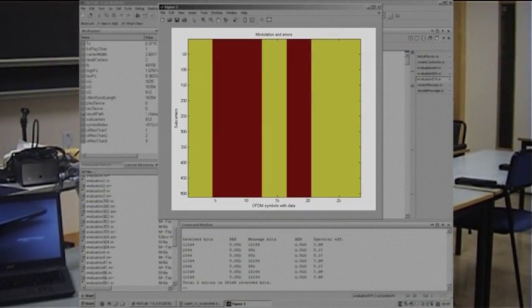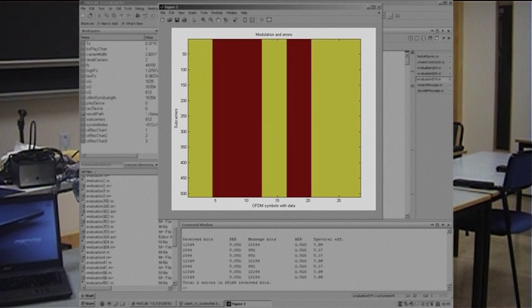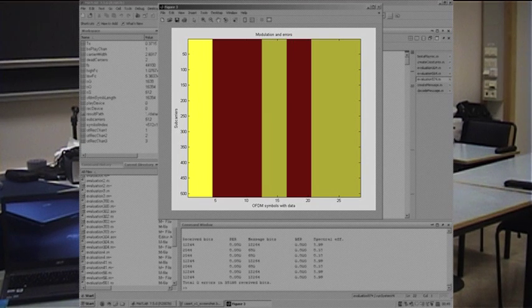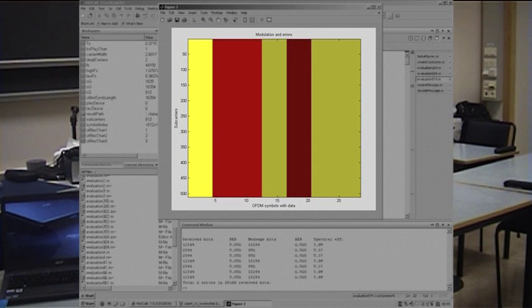What we see here is first a yellow column in the transfer image that was sent while the system was steady. It's all modulated in 64-QAM. The next two red columns were sent while the system was in motion. Those are sent in what we call the safe mode.